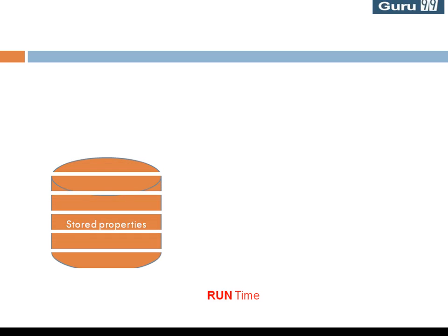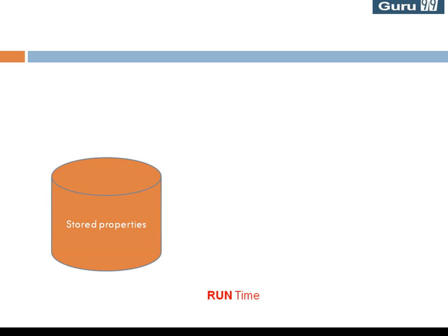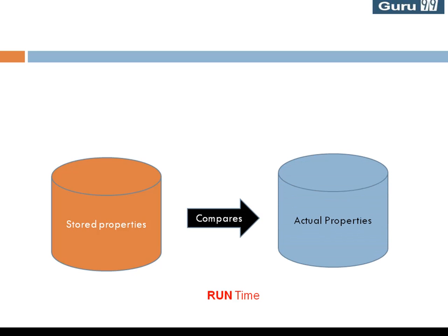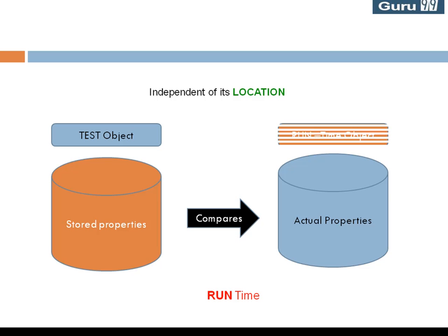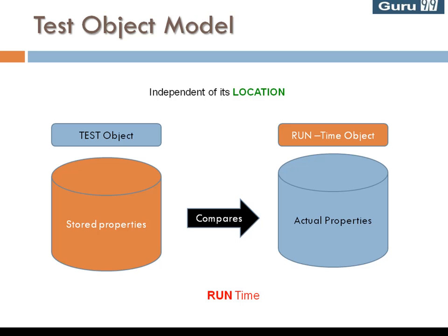During runtime, QTP compares the stored object properties with the actual properties of the objects available on screen and uniquely identifies an object, independent of its location on screen. The stored object together with its properties is called the test object. During runtime, the actual object available in the application under test is called the runtime object. This is QTP's test object model.